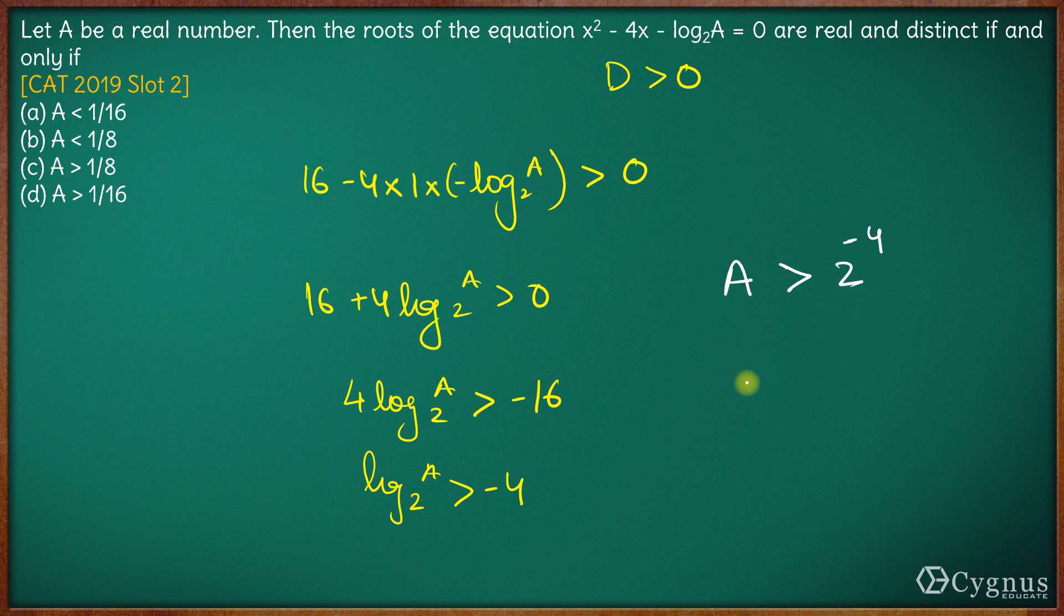So that means a should be greater than, 2 raised to the power 4 is 16, 2 raised to the power minus 4 is 1 upon 16. A should be greater than 1/16. Option D here is the right answer.